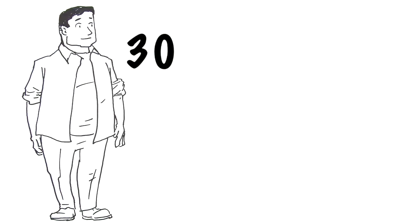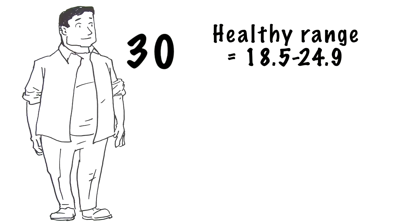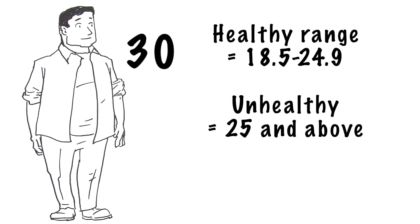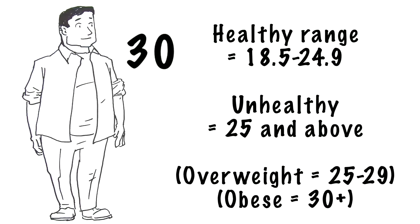Tim's BMI is 30, higher than the healthy range of 18.5 to 24.9. Tim needs to lower his BMI. His doctor says a BMI of 30 or higher significantly increases his health risks.